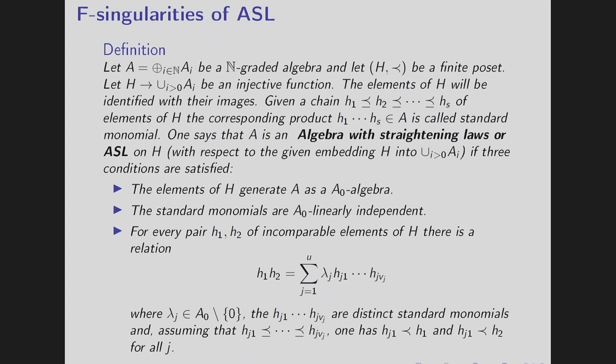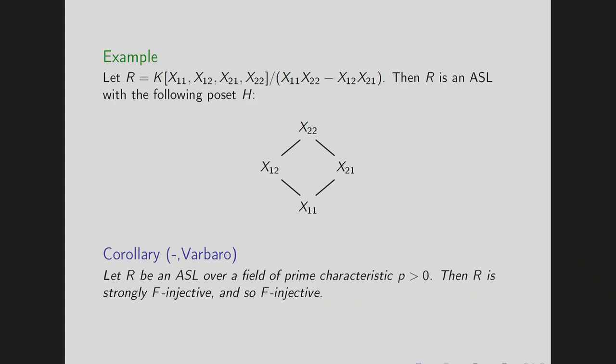So the classical examples of algebras with straightening laws are determinantal ideals, various determinantal ideals. The first one is just take a matrix of 2 by 2 matrix X1, X2, X1, X1, X1, X1, X2, X2, X2, X2, X2 and then consider the determinant of this matrix is this. And then R is an ASL with this poset where X1, X1, X2 and X2 are not comparable, others are comparable. And again one can show that there exists a reverse lexicographic ordering refining the ordering on the poset that any ASL has a square free initial ideal. Hence it is always strongly F-injective.